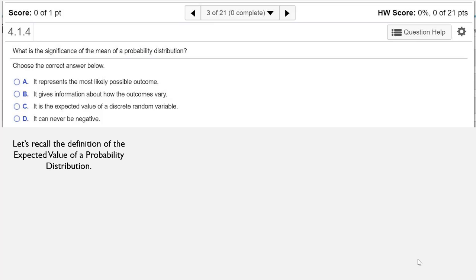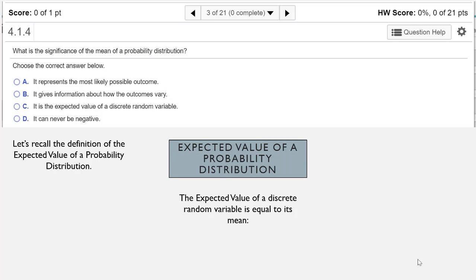So let's go ahead and recall the definition of the expected value of a probability distribution. The expected value of a discrete random variable is equal to its mean. So expected value of X is mu, which is the sum of X times the probability of X.